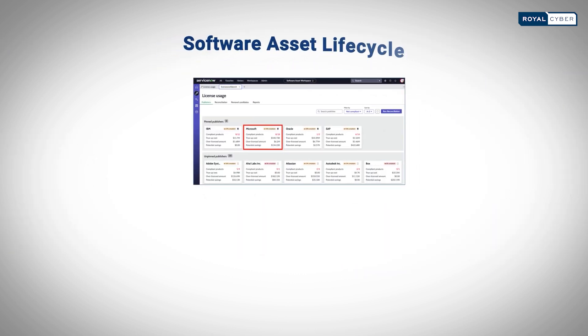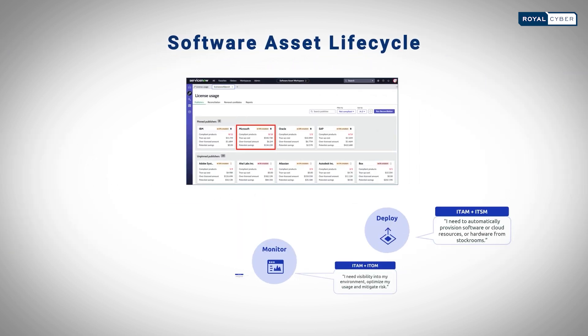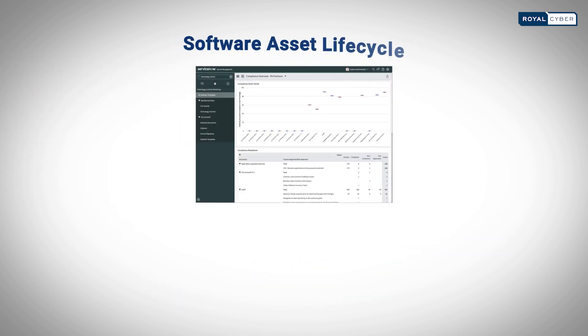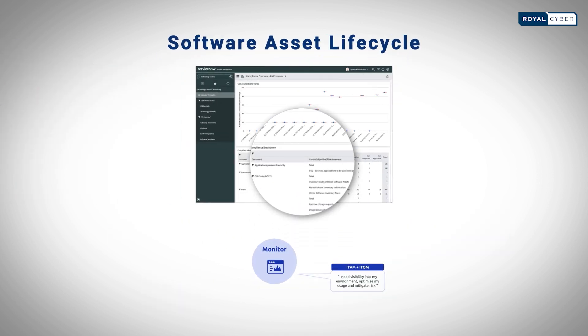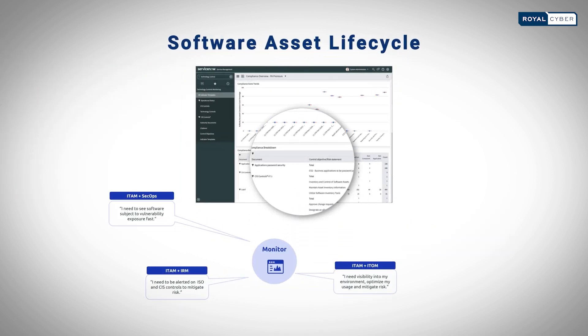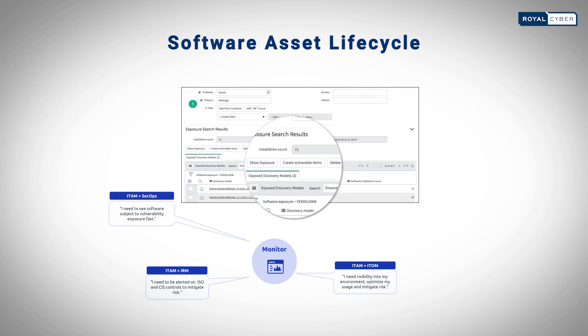The monitoring stage is focused on increasing visibility, ensuring optimal and efficient asset usage, and identifying and mitigating risks. Relevant data is captured and used for software asset strategy. Monitoring helps identify security risks, determine the impact of each risk, and execute appropriate steps to mitigate risks.